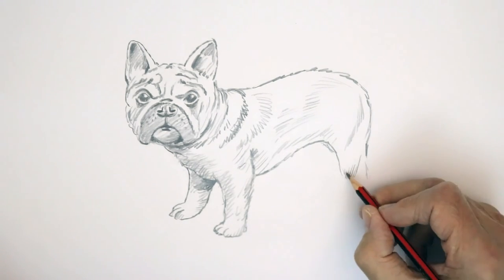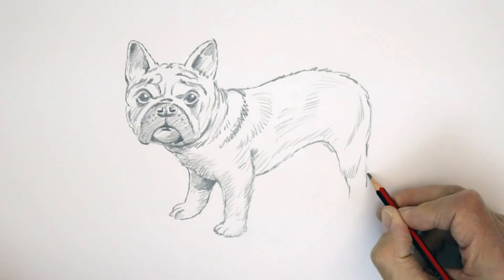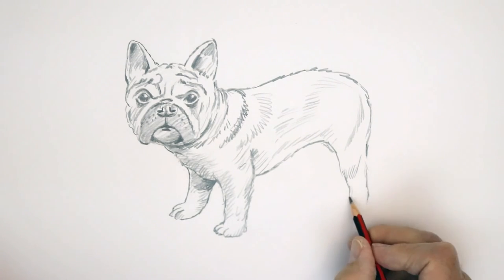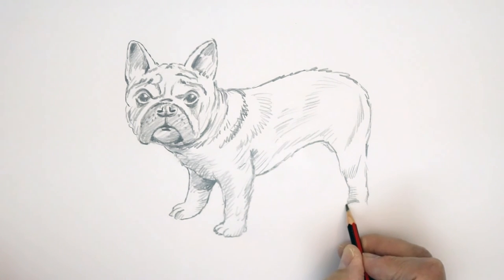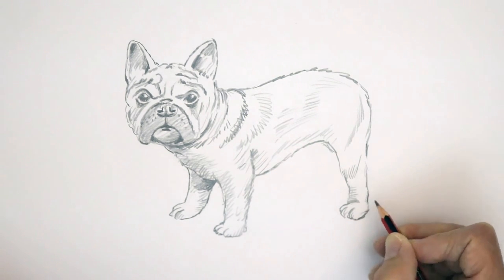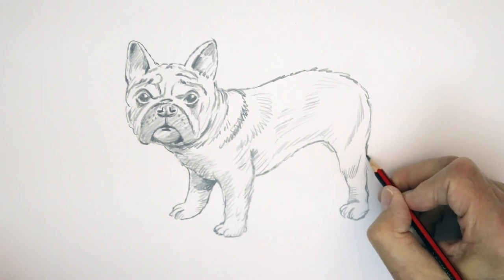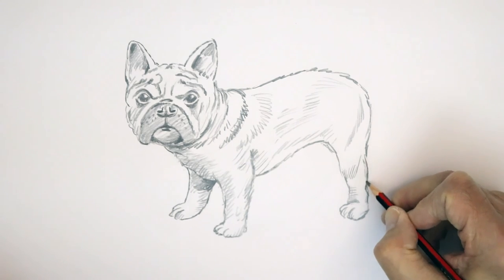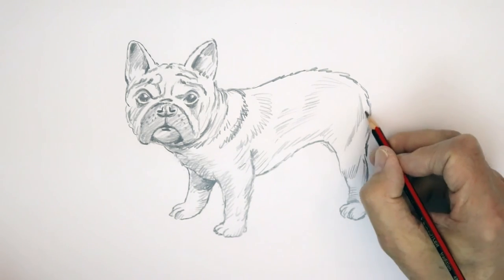Get a bit of the leg shape in there coming down to the paws. Keep it shading in there. Again, the paw shape's coming in like that.